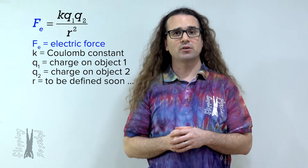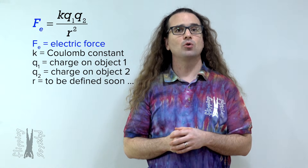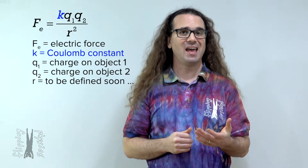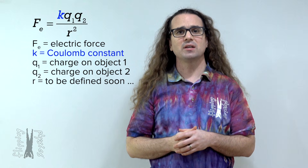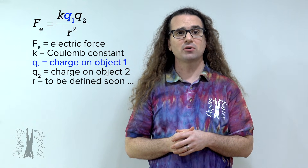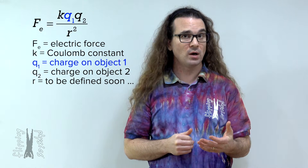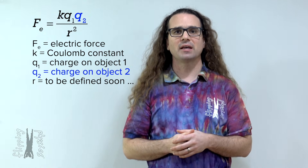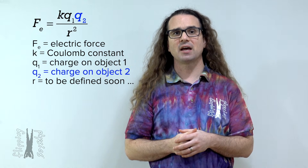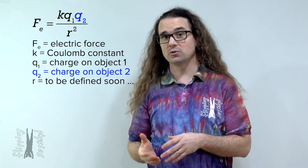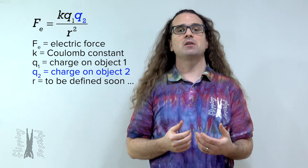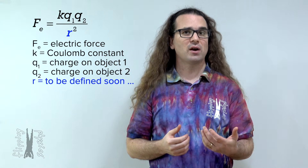The magnitude of the electric force equals the Coulomb constant, k, times the electric charge of the first object, q1, times the electric charge of the second object, q2, all divided by r squared.